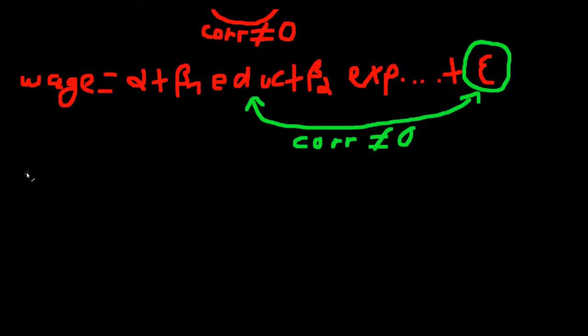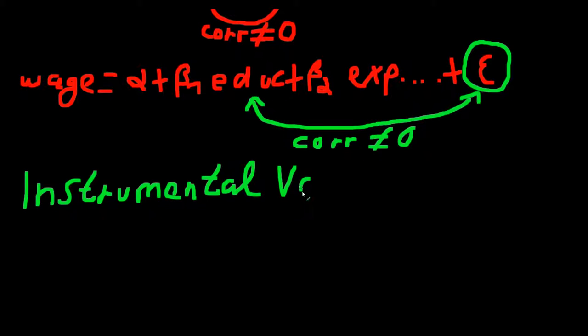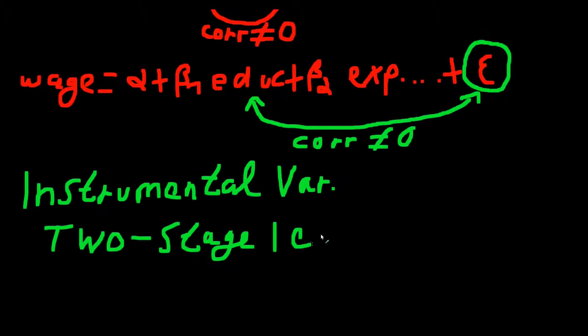And one very prominent way to do so is finding what we call instrumental variables. So instrumental variables. And what we then do is we do two stage least squares.